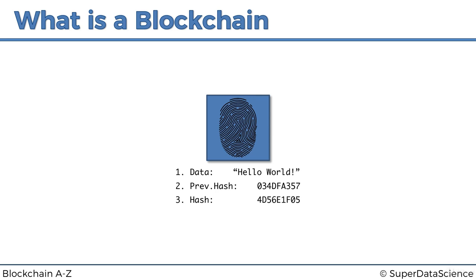That makes it clearer what's going on. The block has its own hash, and then the previous hash — which is contained within the block as a reference — is actually the hash of the block that came before it. Let's have a look at that in action.